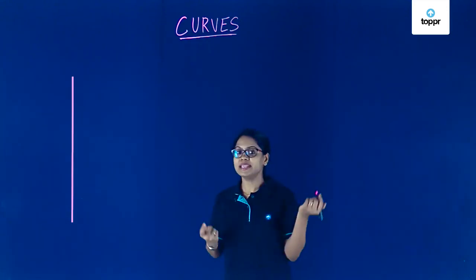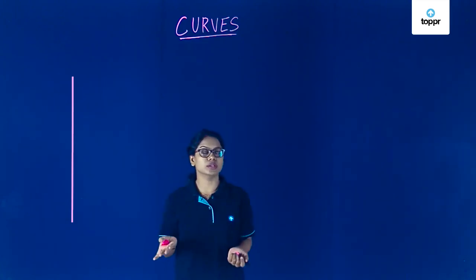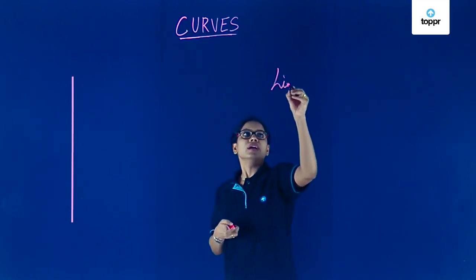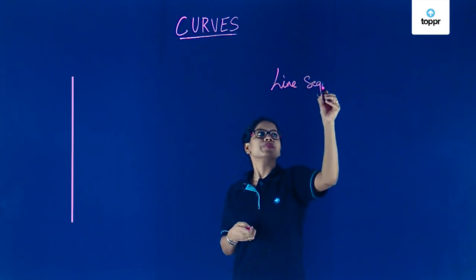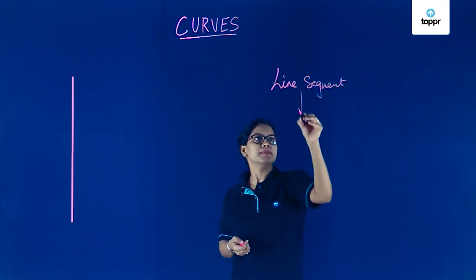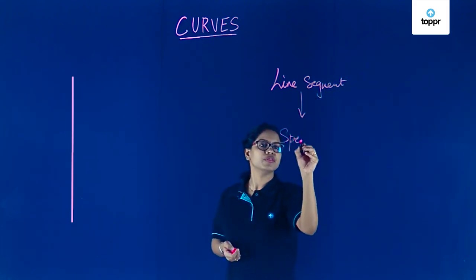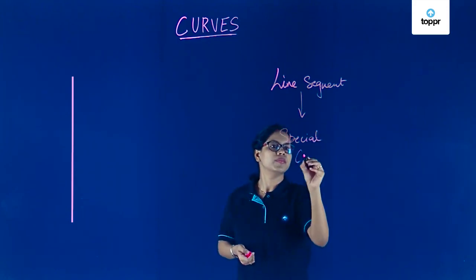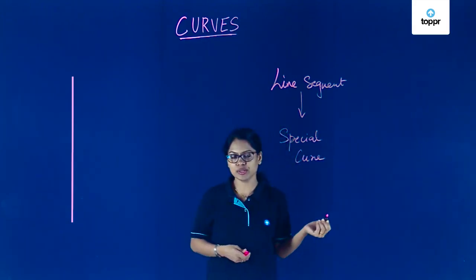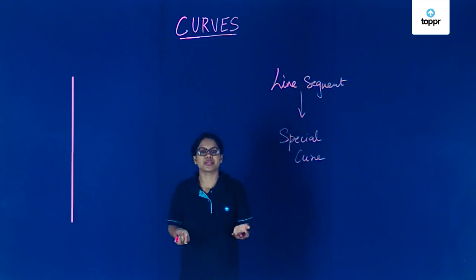So remember, a line segment in maths is also a curve, but a line segment is simply a special kind of a curve. And how is it special? It's special because it is straight. That's it.